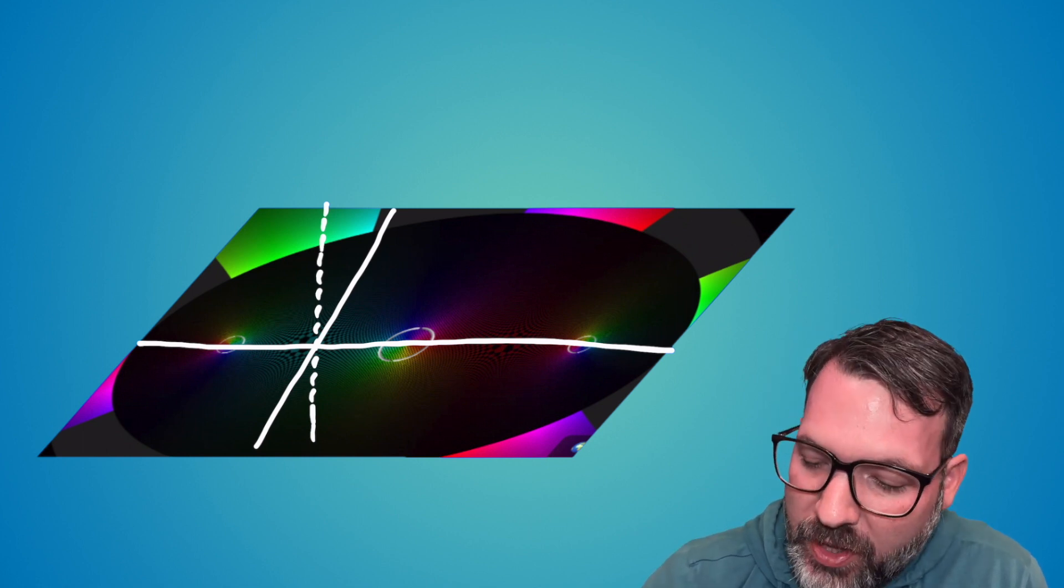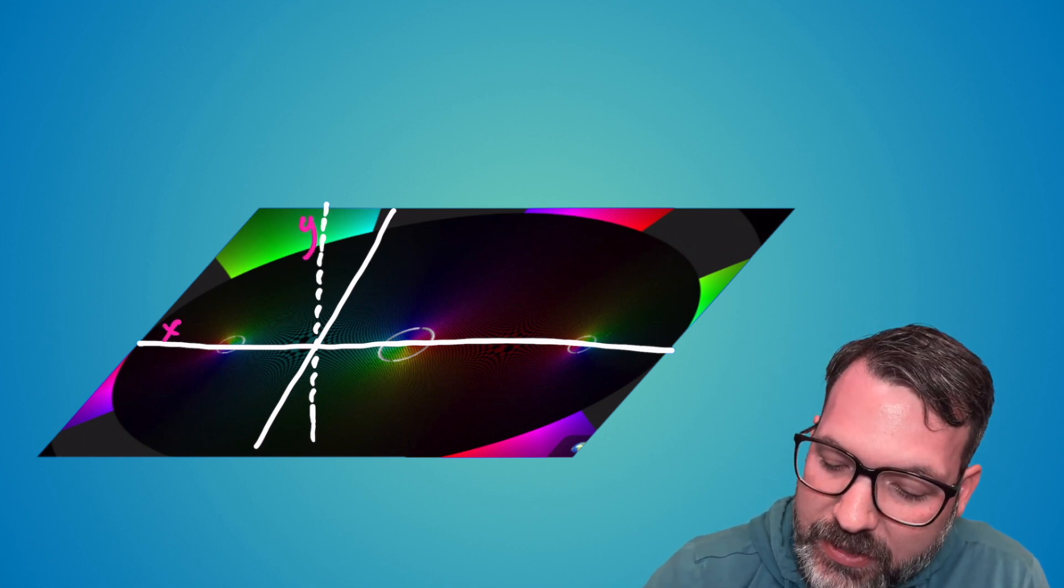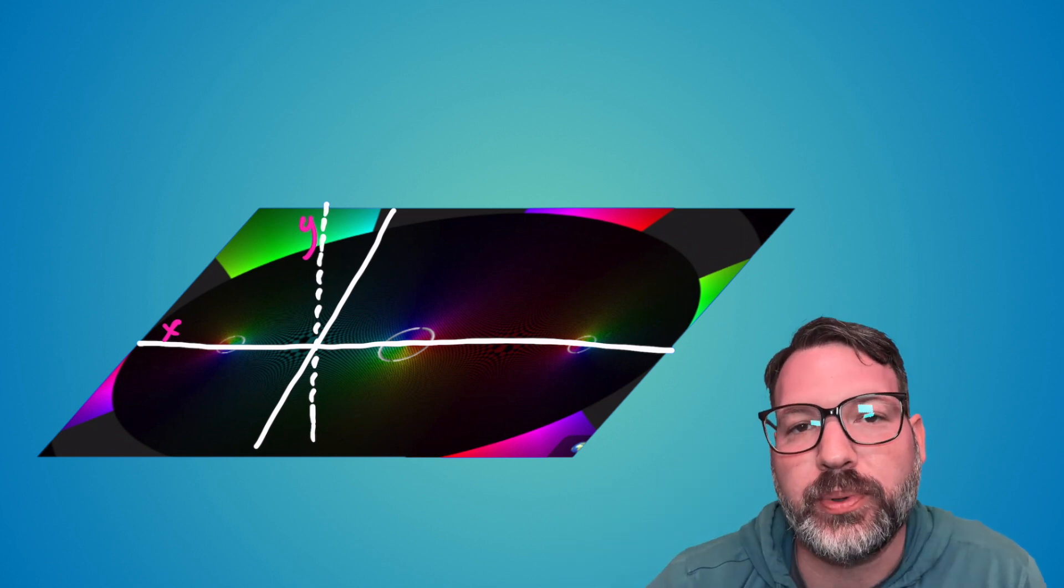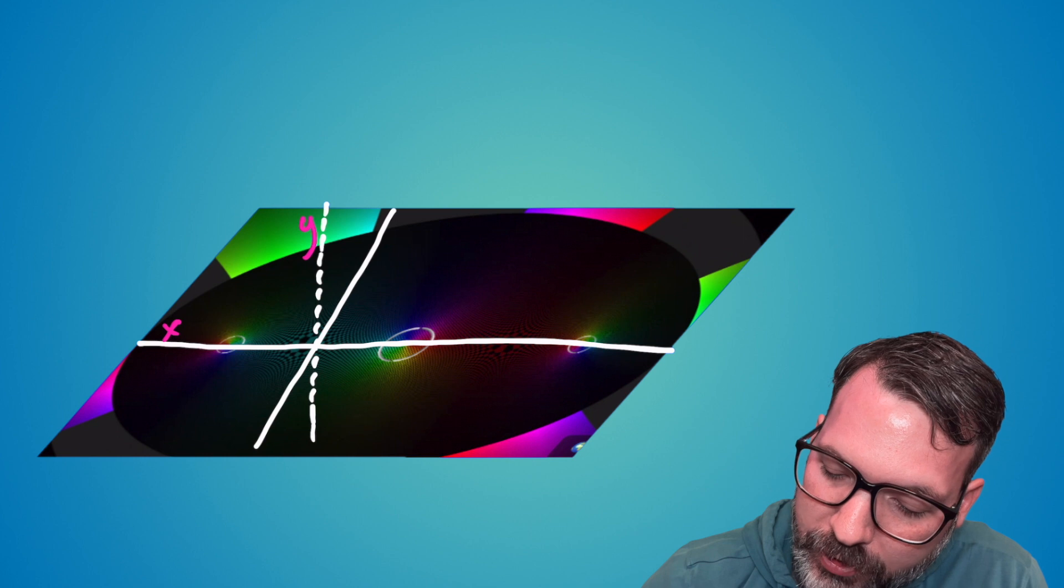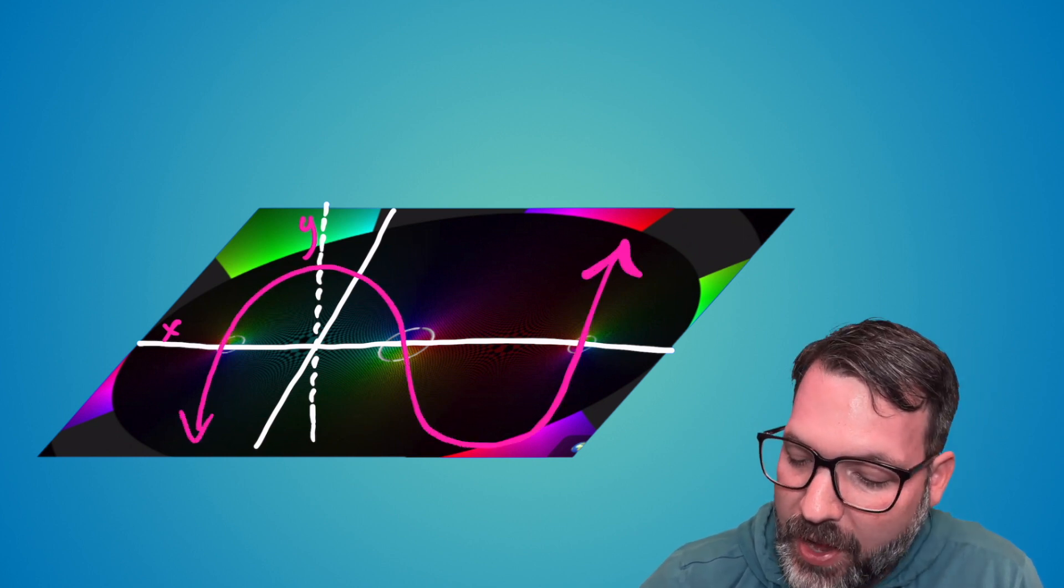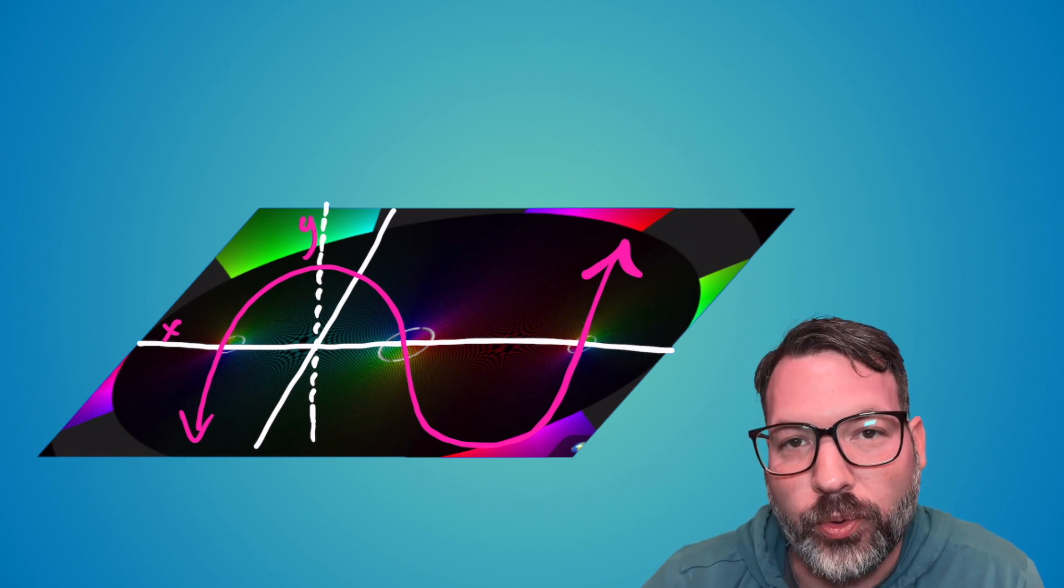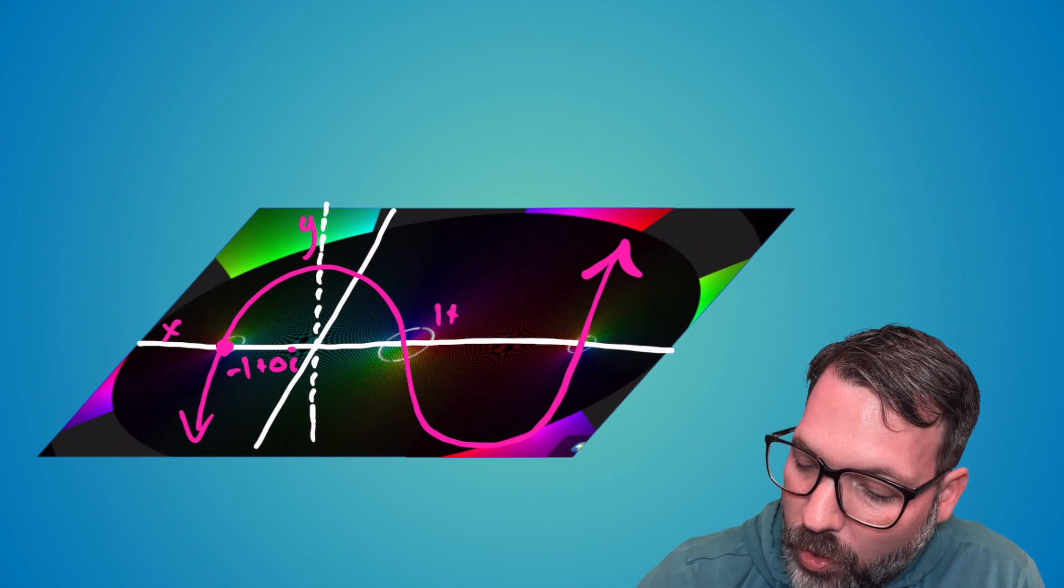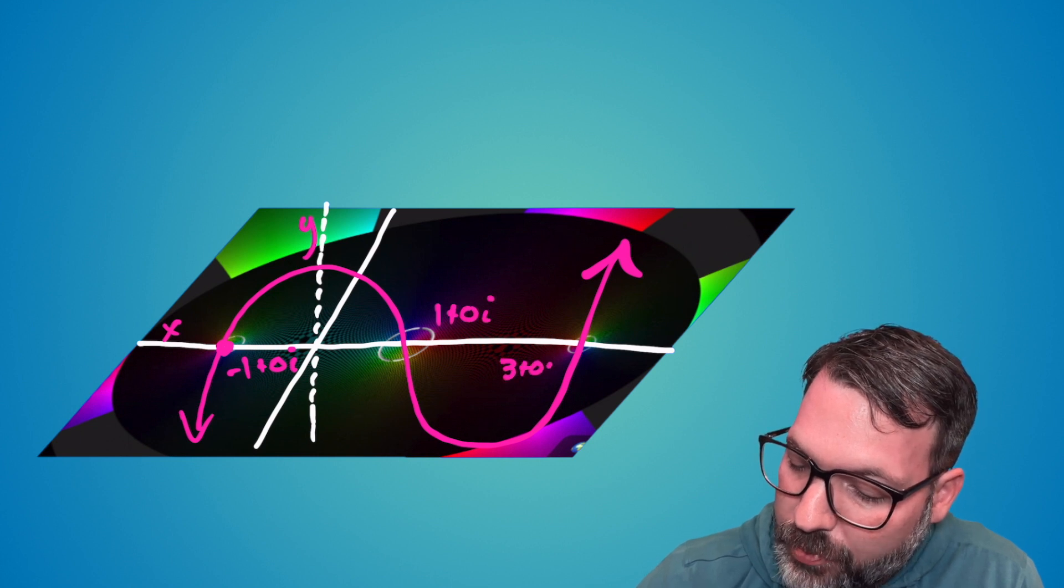So you can imagine just one thin slice, the y-axis, the x-axis here, going through the complex plane itself. And so the initial function would have gone up here, and then down, and then back up. And that's the cubic that we were looking at before. It still has its same roots at negative one plus zero i, one plus zero i, and three plus zero i.